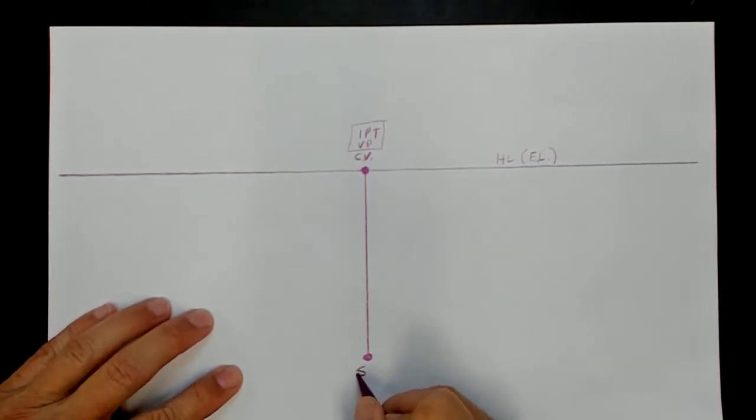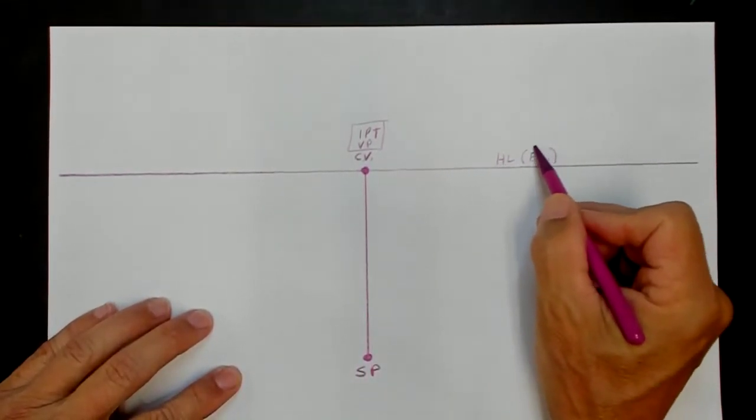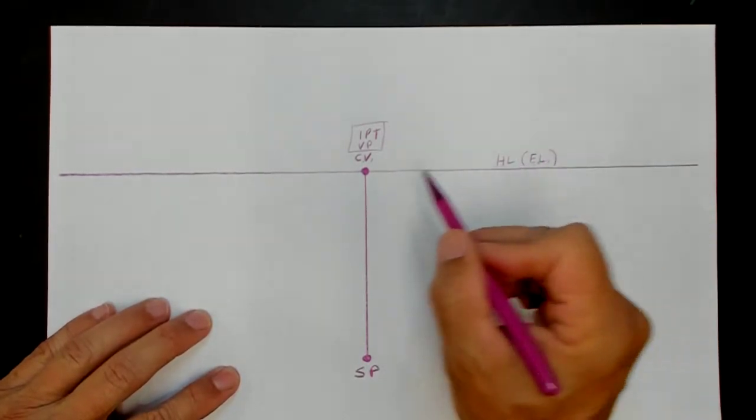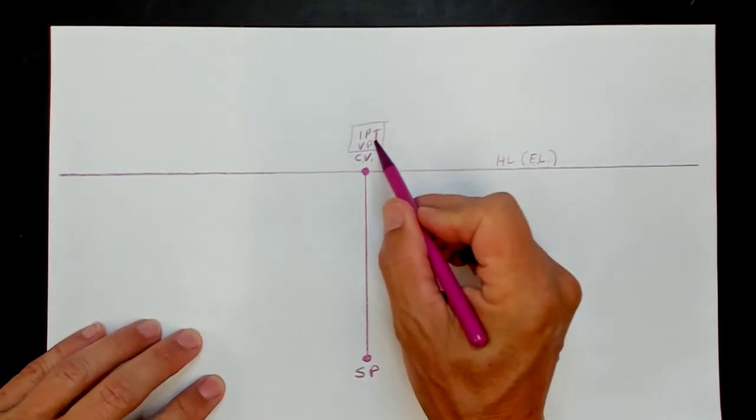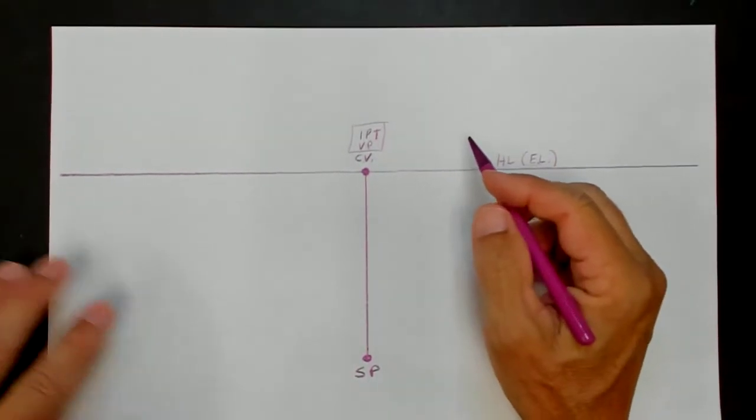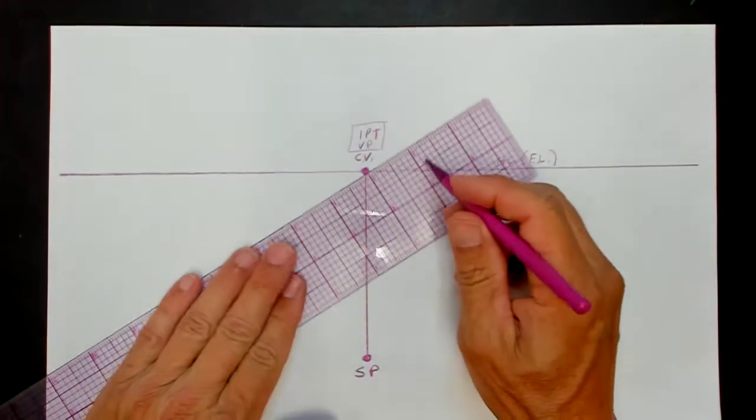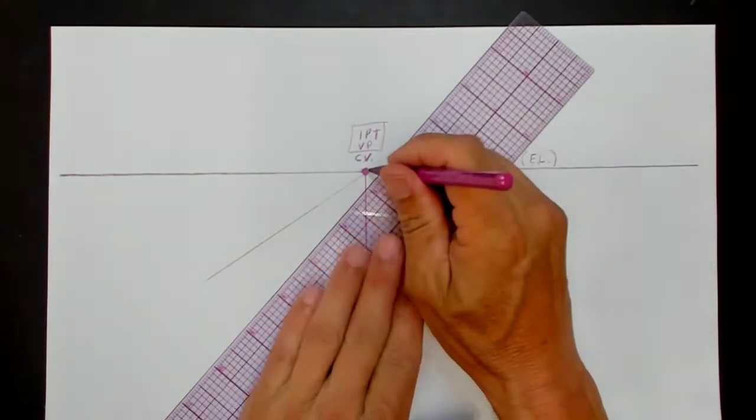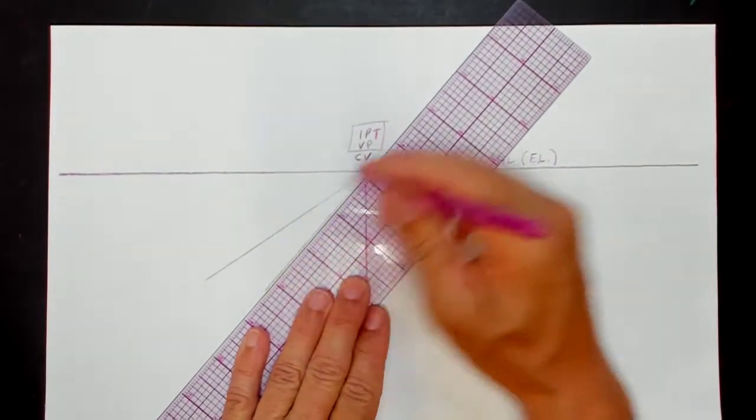There is the station point. This is the viewer's eye. This is the horizon line and the viewer's eye level, and this is the center of vision, and it is also the one-point perspective vanishing point. If you're drawing lines that go back in space, let's do that street again.